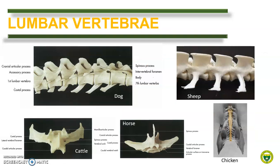In general, the lumbar vertebrae are the same among domestic animals. They differ mostly in the inclination of the transverse processes. In dogs, the transverse processes are oriented cranioventrally, as shown here. The same pattern is observed in pigs. In ruminants like sheep and cattle, as well as in horse, it is horizontally inclined. In birds, the lumbar vertebrae are fused with the sacral vertebrae forming the synsacrum.